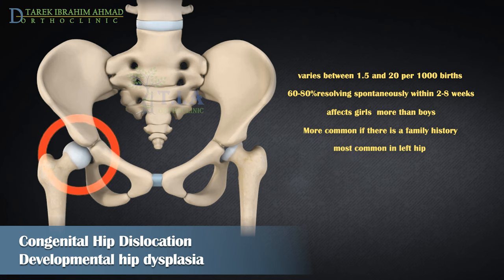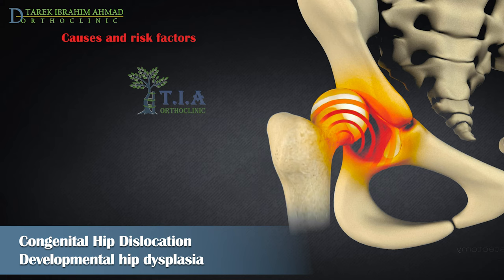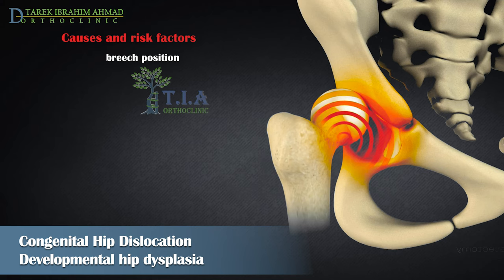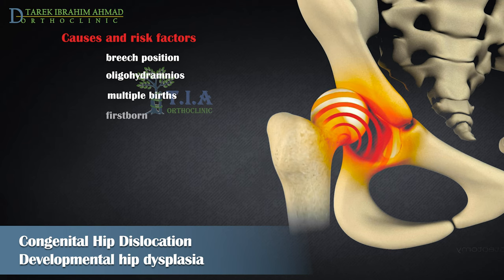DDH can also affect both hips. The exact causes are not always known; hip instability might appear after birth in babies who were in the breech position for an extended period of time before delivery. Physical limitations such as oligohydramnios or twins in utero can also contribute to DDH. Six out of ten cases of hip dysplasia occur in firstborn children, possibly because the mother's womb is tighter during her first pregnancy, which can restrict fetal movement.